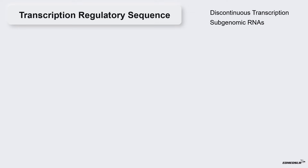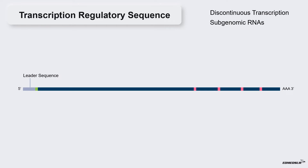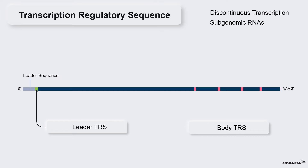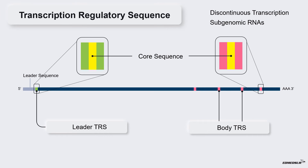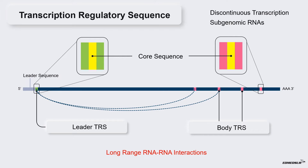Before discussing discontinuous transcription and subgenomic RNAs, it is important to learn about transcription regulatory sequences or TRS. There are two types: leader TRS, located at the five-prime end of the genomic RNA just downstream of the leader sequence, and body TRS, located at the junction between each gene encoded towards the three-prime side. Within these TRS regions there are highly conserved core sequences. The core sequences in body TRS and leader TRS have a tendency to interact through long-range RNA-RNA interactions, which are crucial for discontinuous transcription.